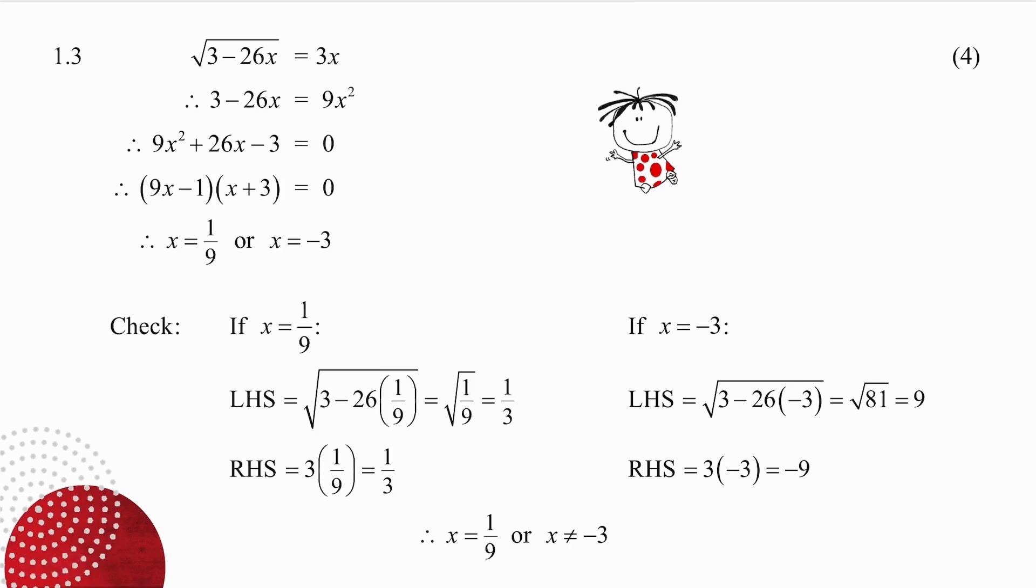Number 1.3 is a surd equation. I've got the square root on its own, on one side. So I can square both sides. Remember when you get a square root squared, you're just left with what's underneath, and that becomes 9x squared. Set up a quadratic, factorize, and get your two answers.